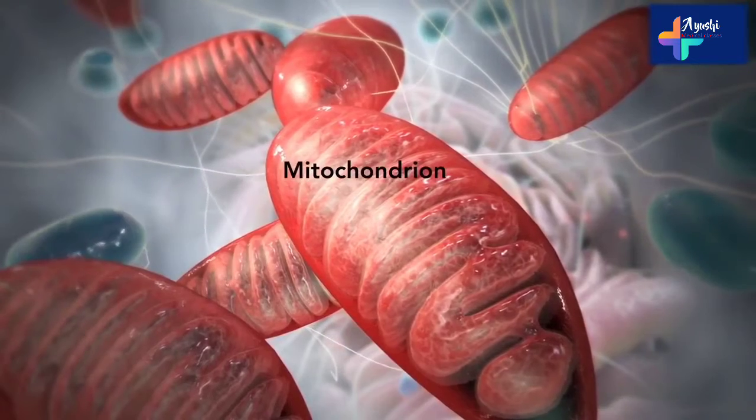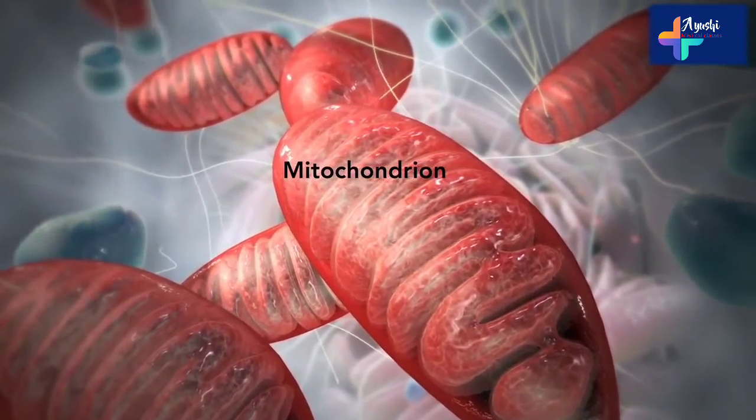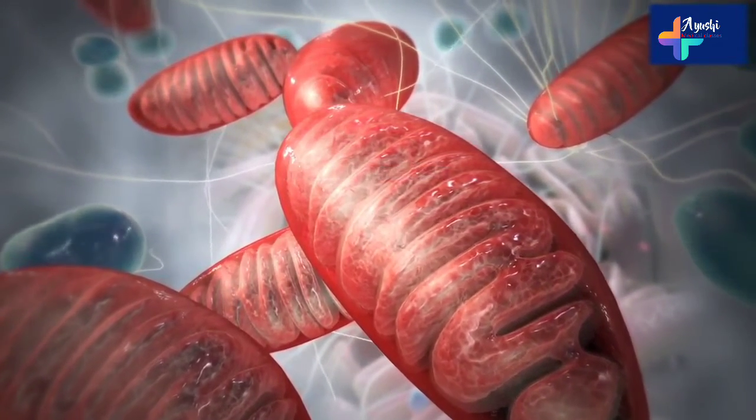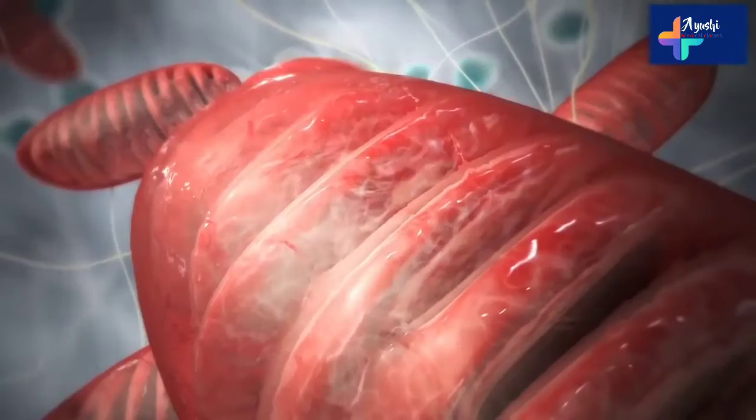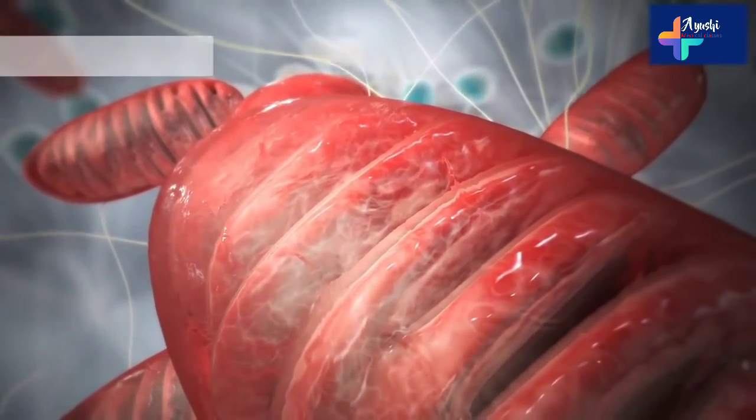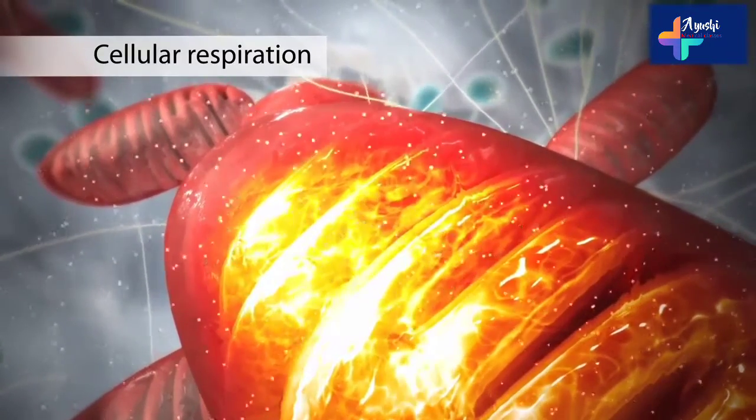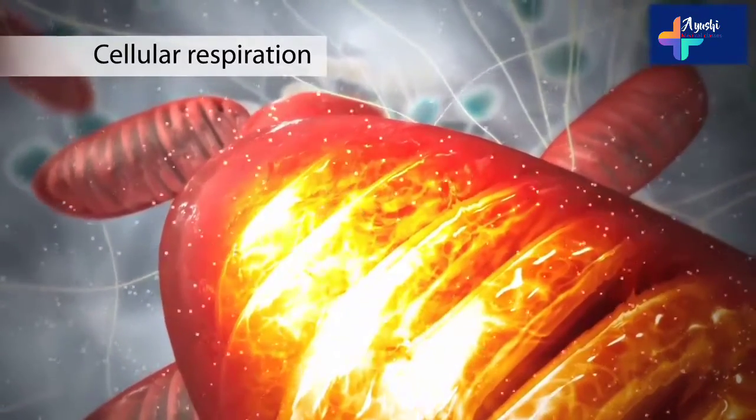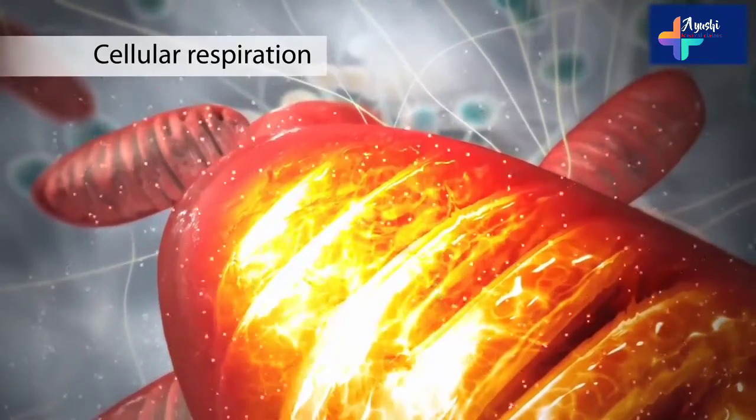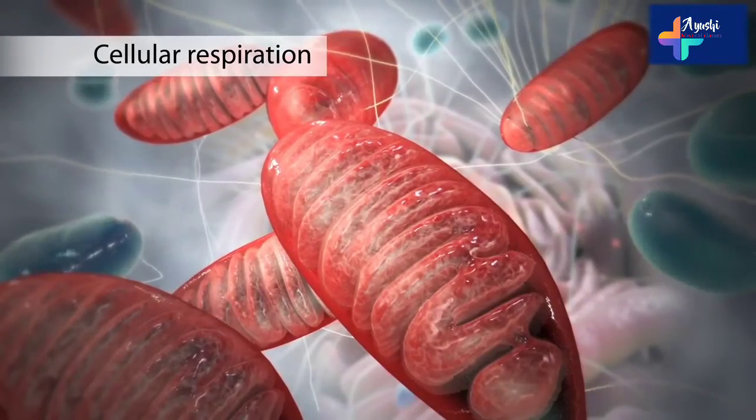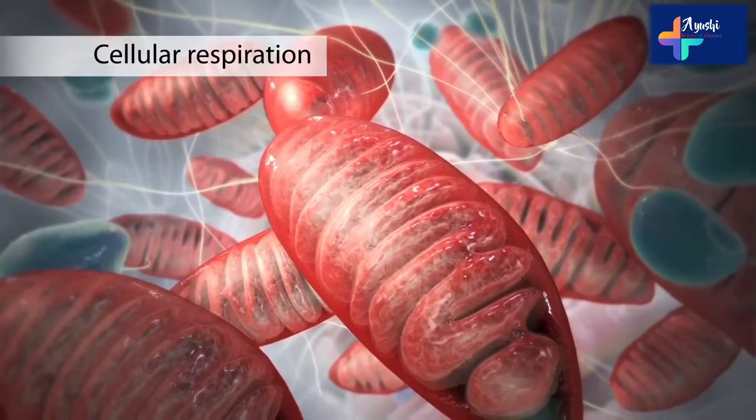The mitochondrion is an organelle that is the powerhouse for both animal and plant cells. During a process called cellular respiration, the mitochondria make ATP molecules that provide the energy for all of the cell's activities. Cells that need more energy have more mitochondria.